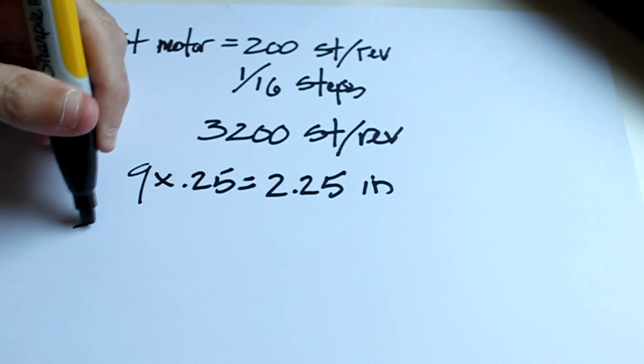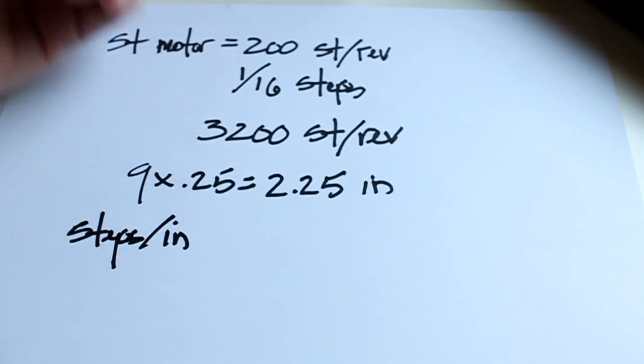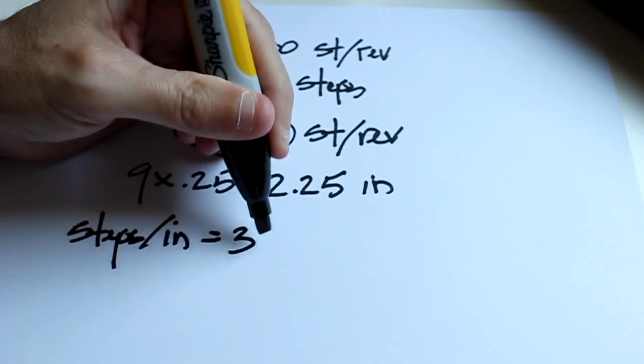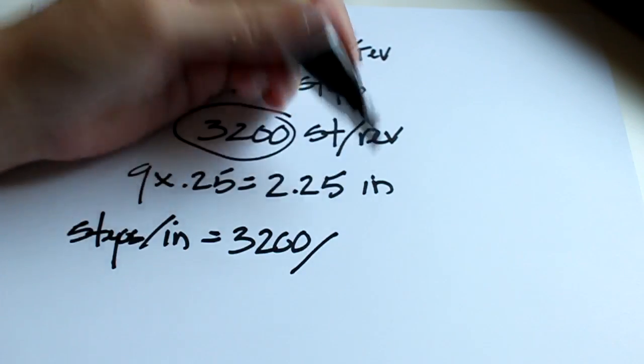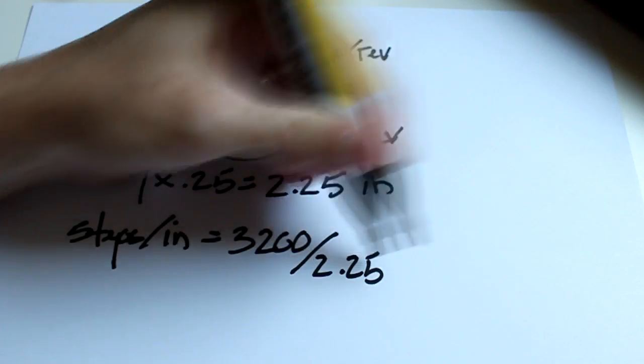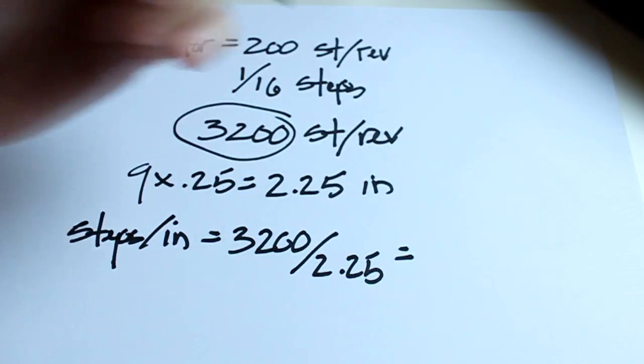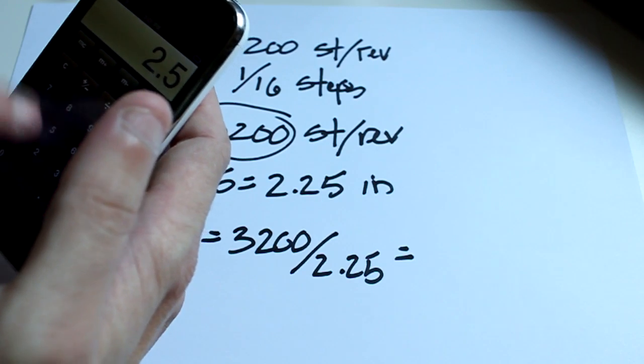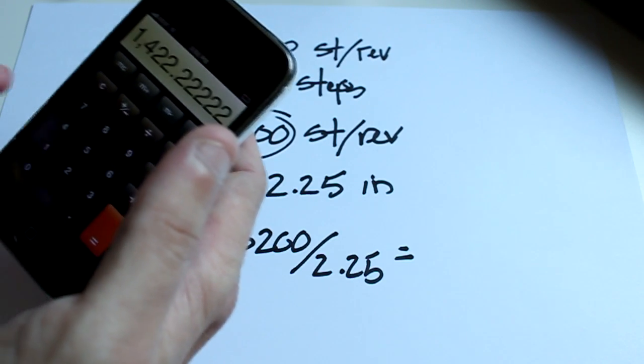We're looking for steps per inch. So we simply take this number here which is 3200, that's the steps, and then we divide it by the number of inches, 2.25, and that will give us our number for steps per inch. So we have 3200 divided by 2.25 and we have 1422.22 repeating.